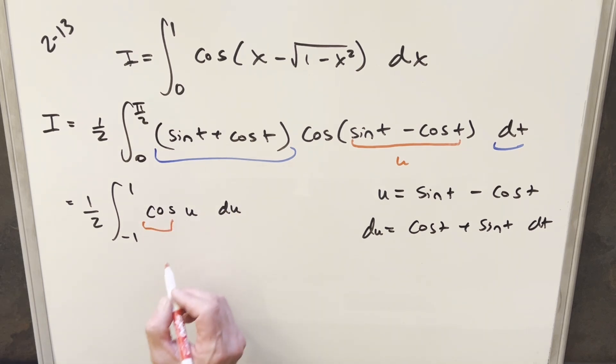But cosine is actually an even function. We've got symmetric bounds around 0, minus 1 to 1. So what I can actually do is get rid of this lower bound. And because of the symmetry, I can change this bound to 0 and multiply by a 2 in front. But of course, half times 2 will just cancel right there and give me a 1.